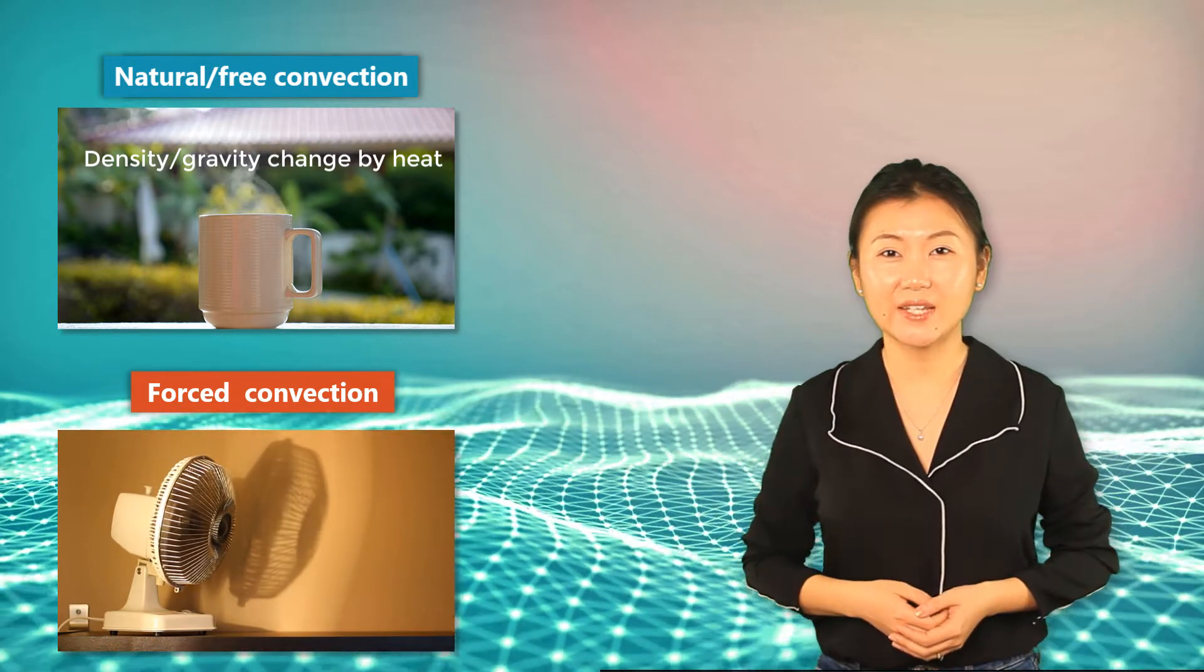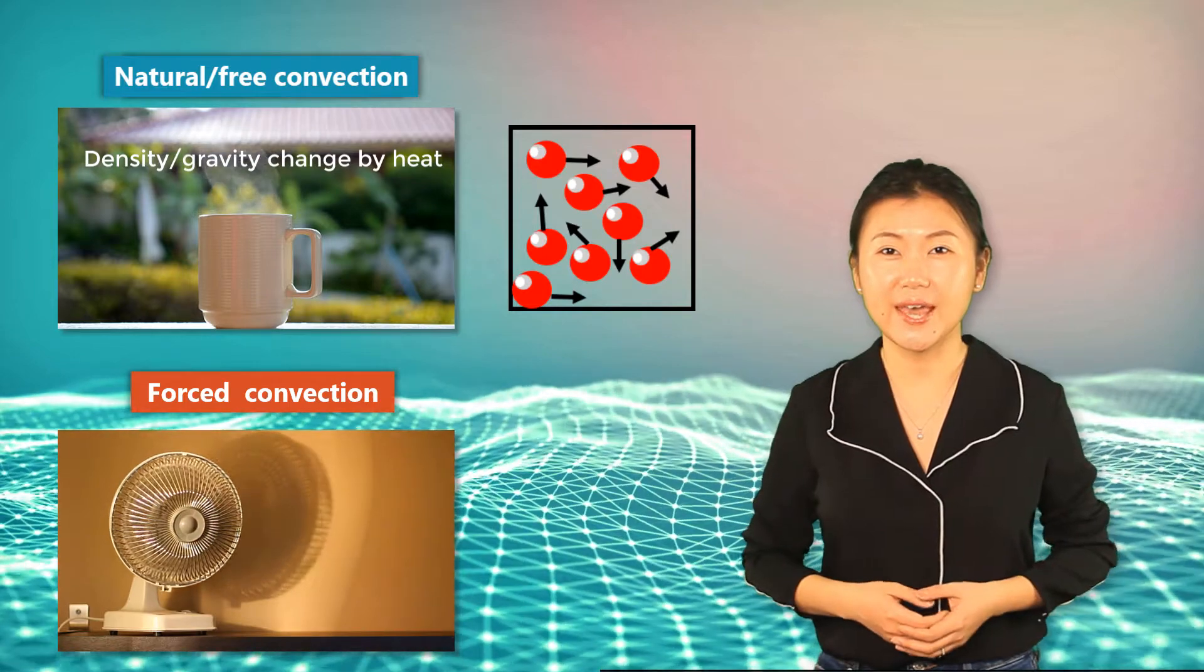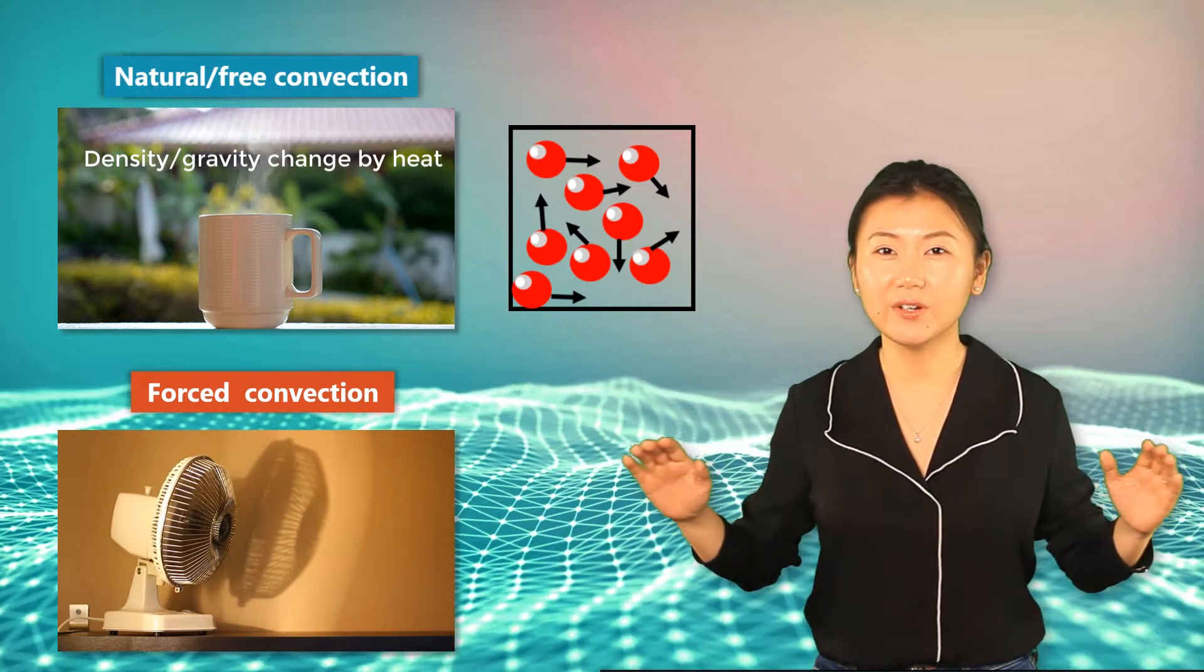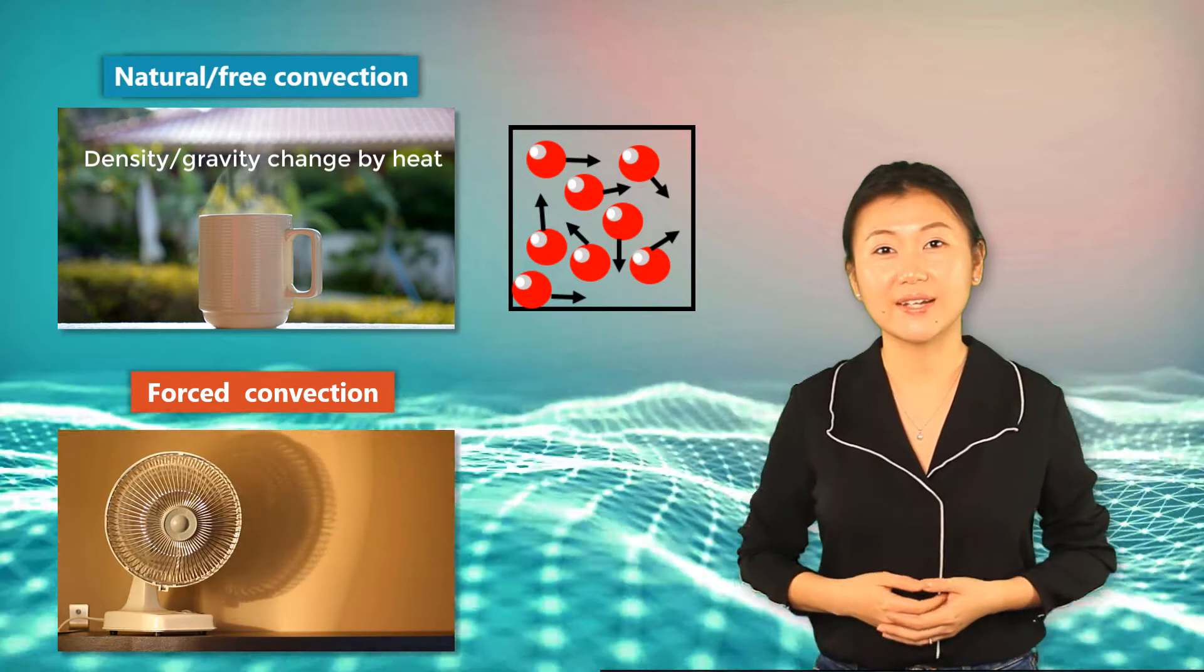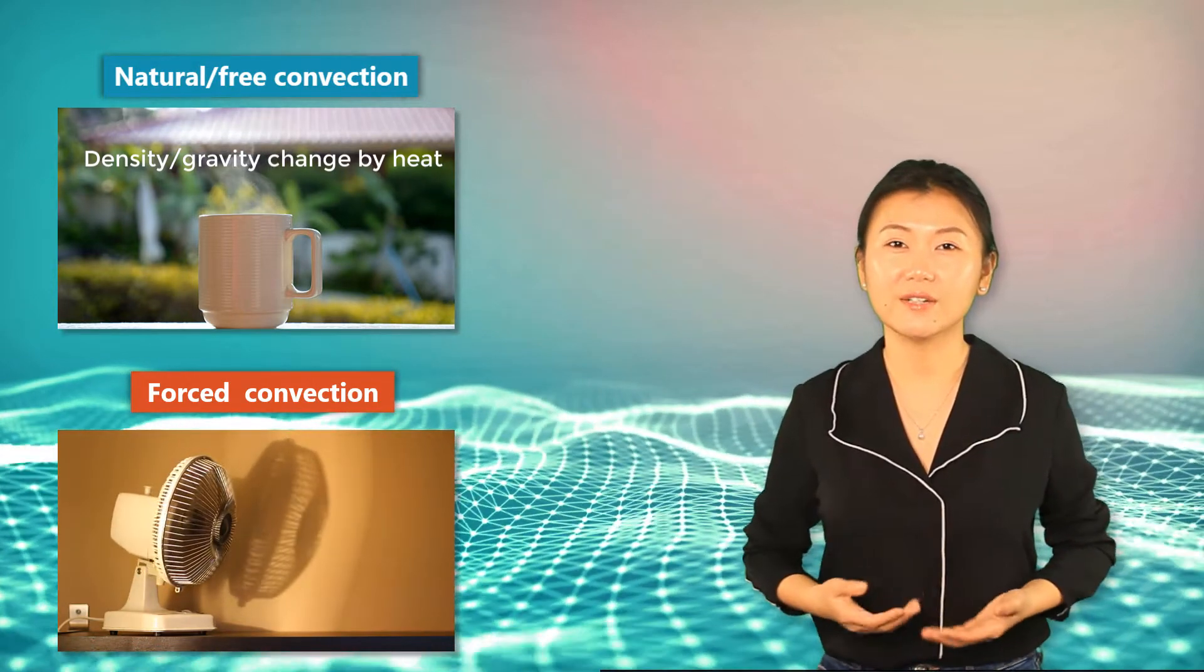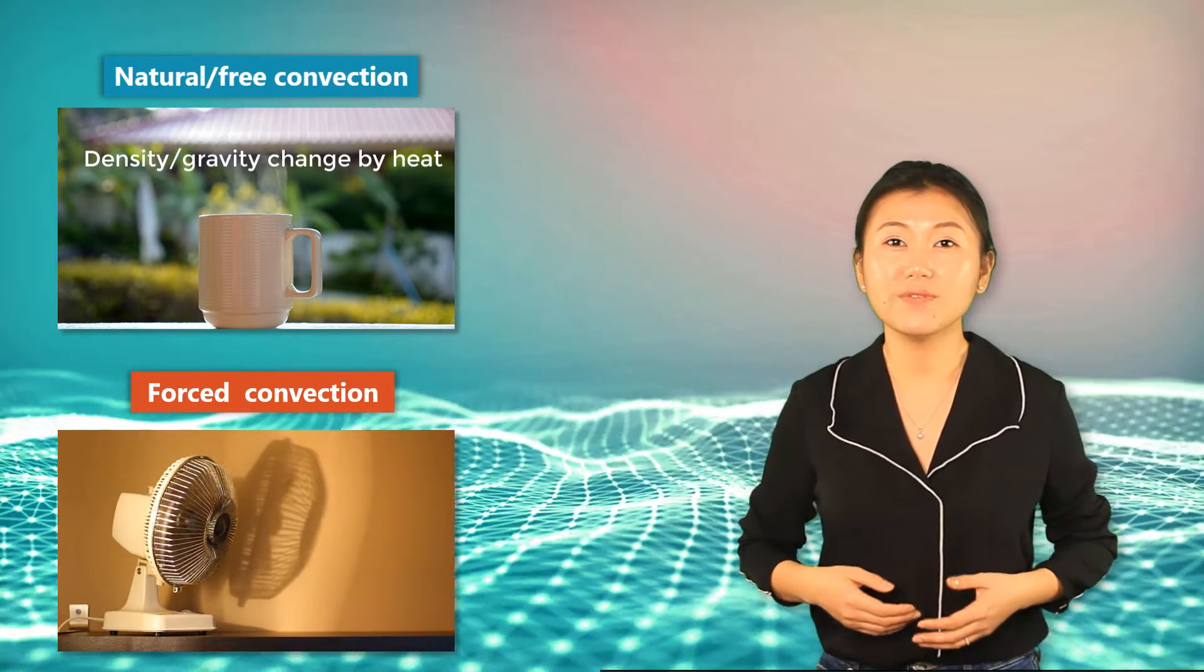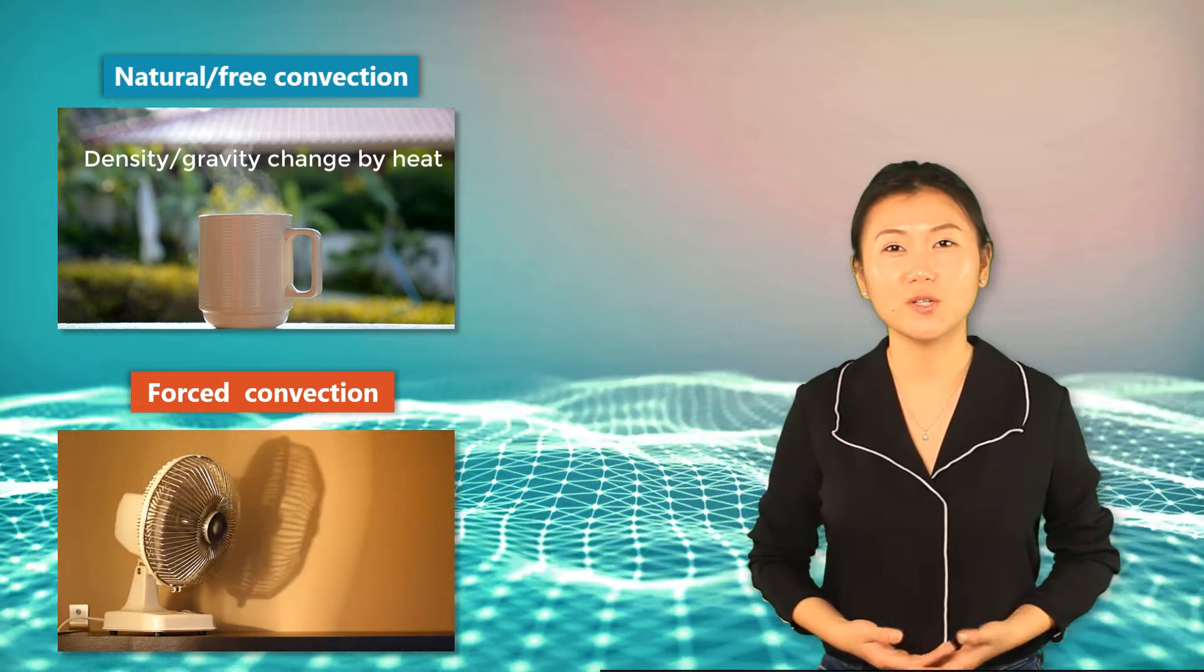The change in density is due to the fact that at higher temperature, the fluid molecules have more energy and thus they tend to move further apart. There's nothing except for gravity that is needed to drive natural convection. Forced convection, on the other hand, is driven by an external source such as a pump or a fan so as to force the fluid flow.